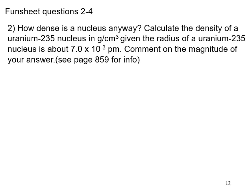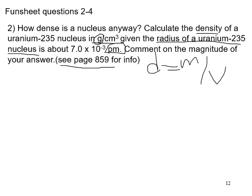For fun sheet questions 2 through 4: the nucleus is the most dense part of the atom. Your textbook page 859 provides information to calculate the density of a uranium-235 nucleus. Density is in grams per cubic centimeter. You're given the radius of a uranium-235 nucleus in picometers — convert picometers to centimeters, get a cubic volume, determine the mass of one uranium atom in grams, then apply d = m/V.